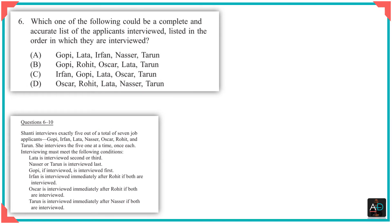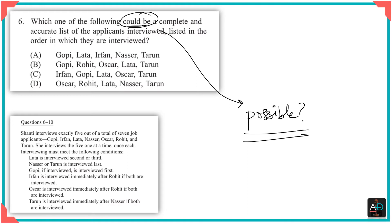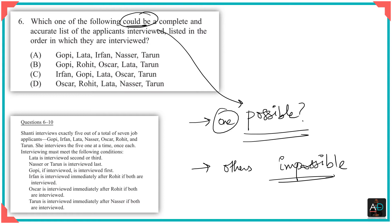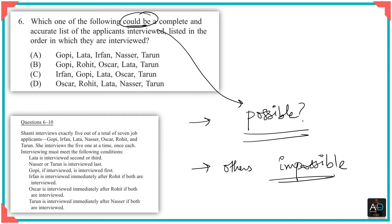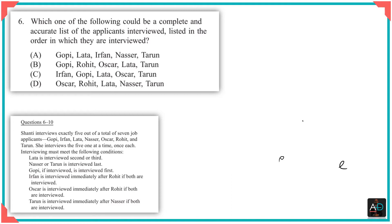Question 1 asks which of the following could be a complete list. In a 'could be' question, you're looking for what's possible — meaning the other options must be impossible. Your target in elimination is to prove which options violate the rules, and whichever you cannot prove impossible is your answer. Let's work through the options.